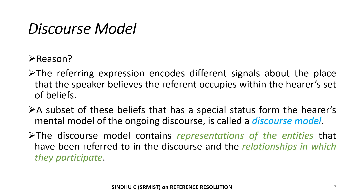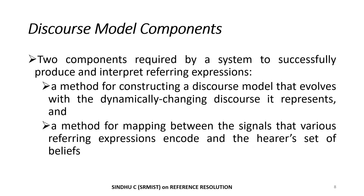The reason the hearer is not able to understand such reference words is that the referring expression encodes different signals about the place that the speaker believes the referent occupies within the hearer's set of beliefs. A subset of these beliefs that has a special status forms the hearer's mental model of the ongoing discourse — this is called the discourse model. The discourse model contains representatives of the entities that have been referred to in the discourse and the relationships in which they participate. The discourse model has two fundamental components required by a system to successfully produce and interpret referring expressions: a method for constructing a discourse model that evolves with the dynamically changing discourse, and a method for mapping between the signals that various referring expressions encode and the hearer's set of beliefs.